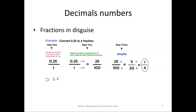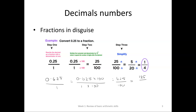Let's have a look at another one: 0.625 divided by 1. What we're going to do is multiply the top by 100, and then the bottom is also going to be multiplied by 100. That gives us 625 divided by 100. We can start dividing by 5 — so we divide it by 5 once and we get 125 over...